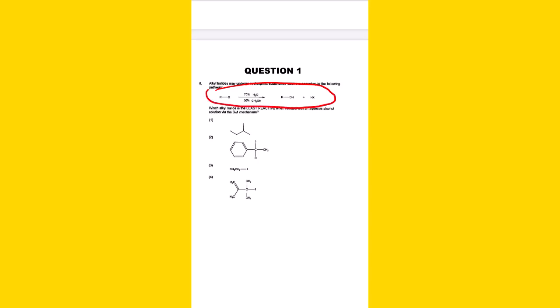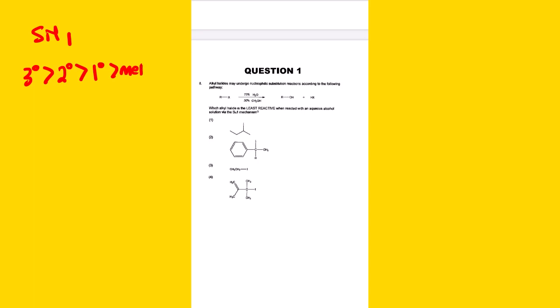Question one: alkyl halides may undergo nucleophilic substitution reactions according to the following general pathway. The question asks which alkyl halide is the least reactive when reacted with an aqueous alcohol solution via SN1. Under SN1, the reactivity trend based on the substrate is: tertiary alkyl halide reacts best, followed by secondary, then primary, and lastly the methyl halide.